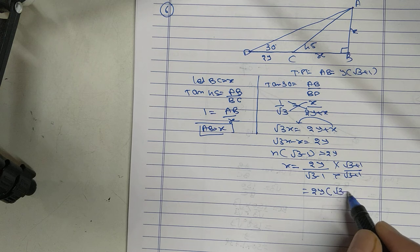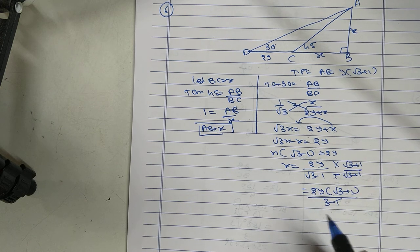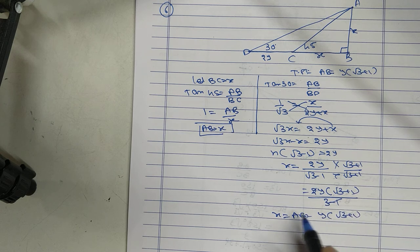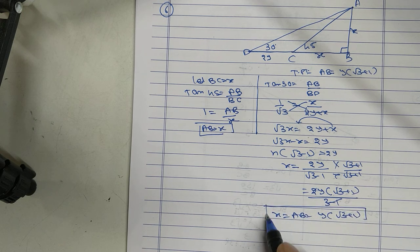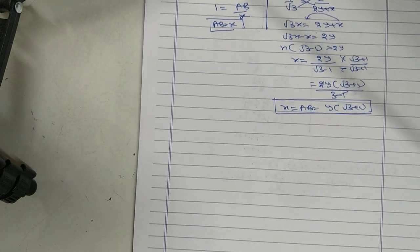Rationalize 2i, using a minus b times a plus b equals a square minus b square. Cancel. X equals AB equal to Y.